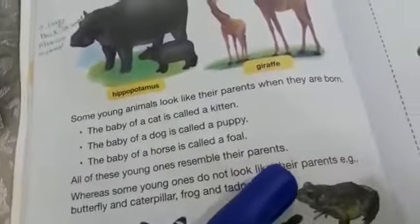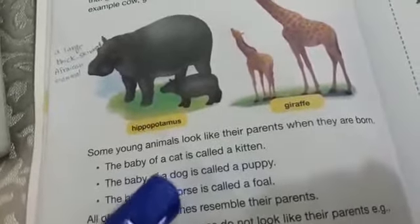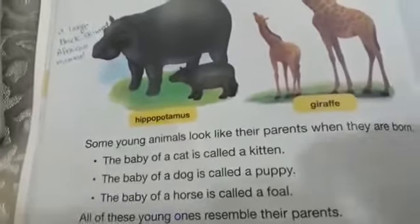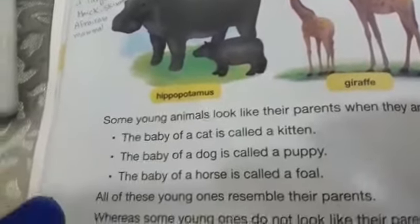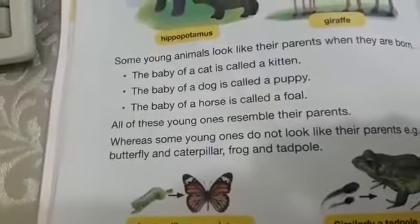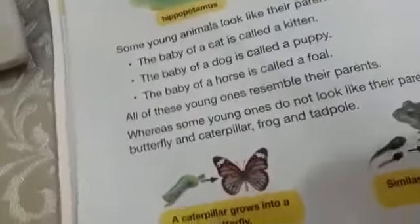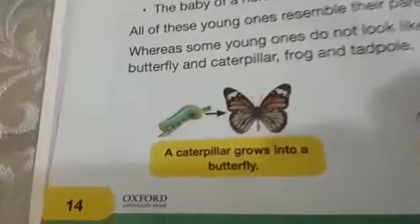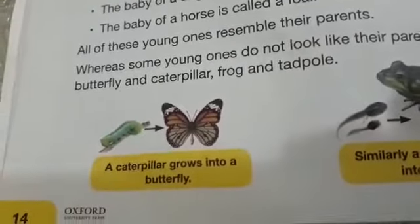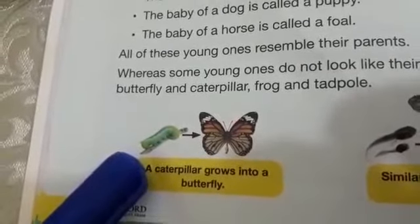All these young ones resemble their parents — you can easily judge whether the kitten is the young one of a cat, the puppy looks like a dog, and a foal resembles the horse. However, some young ones don't look like their parents — initially their stages are different. As they grow into adults they are different. A caterpillar grows into a butterfly — the first stage of the butterfly is caterpillar, and after caterpillar it grows into a butterfly.